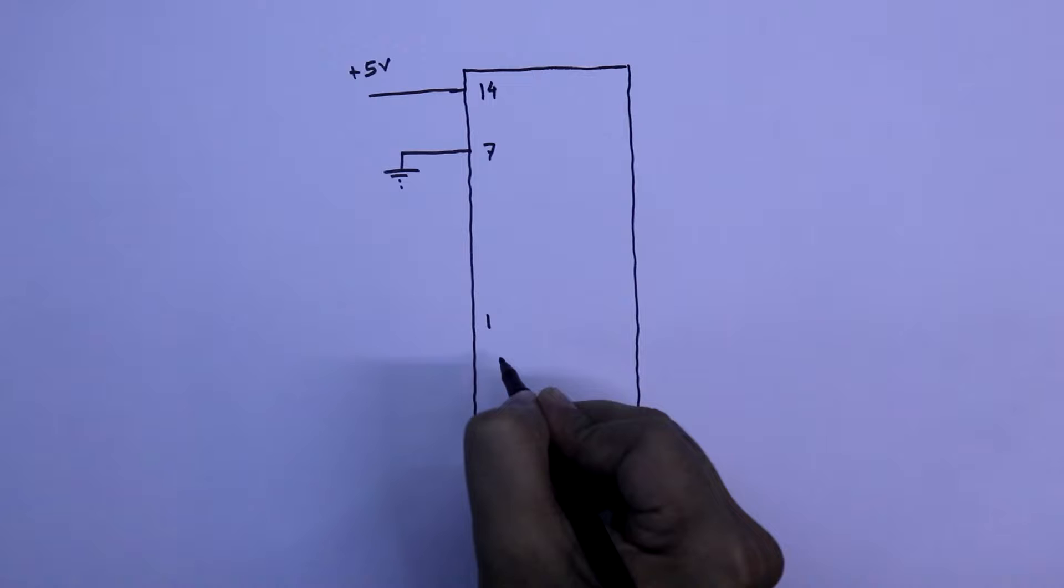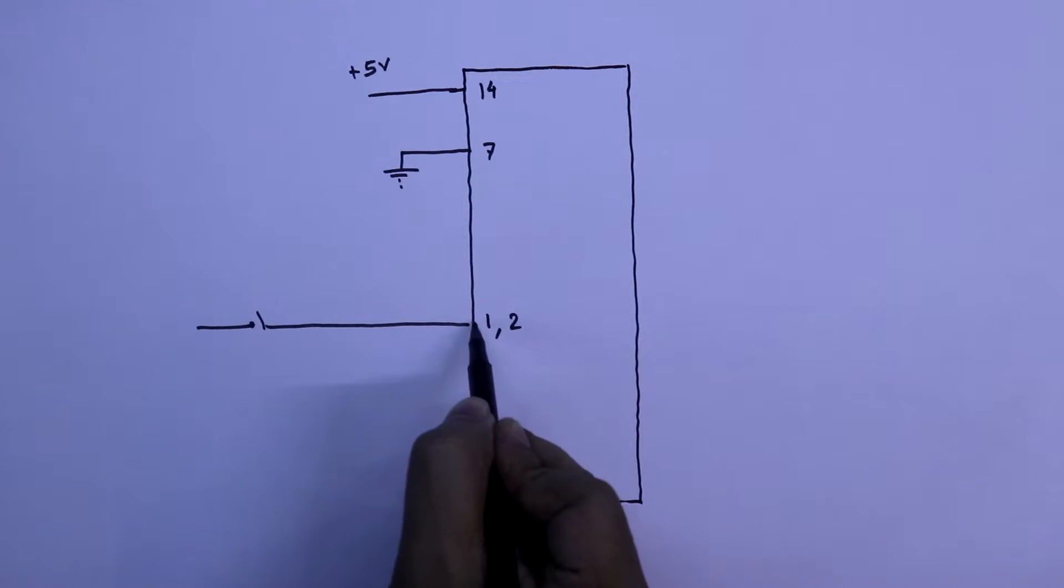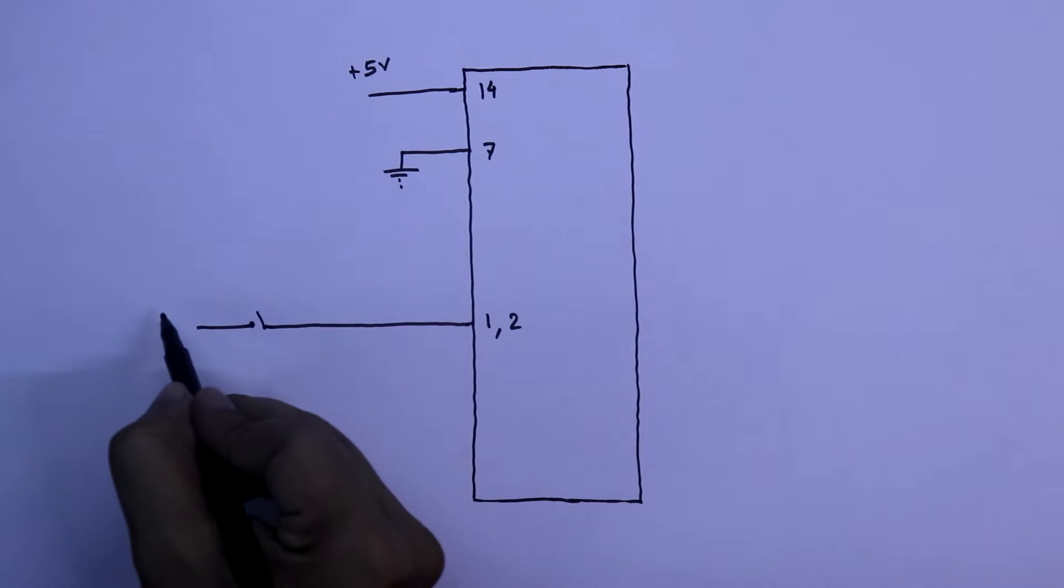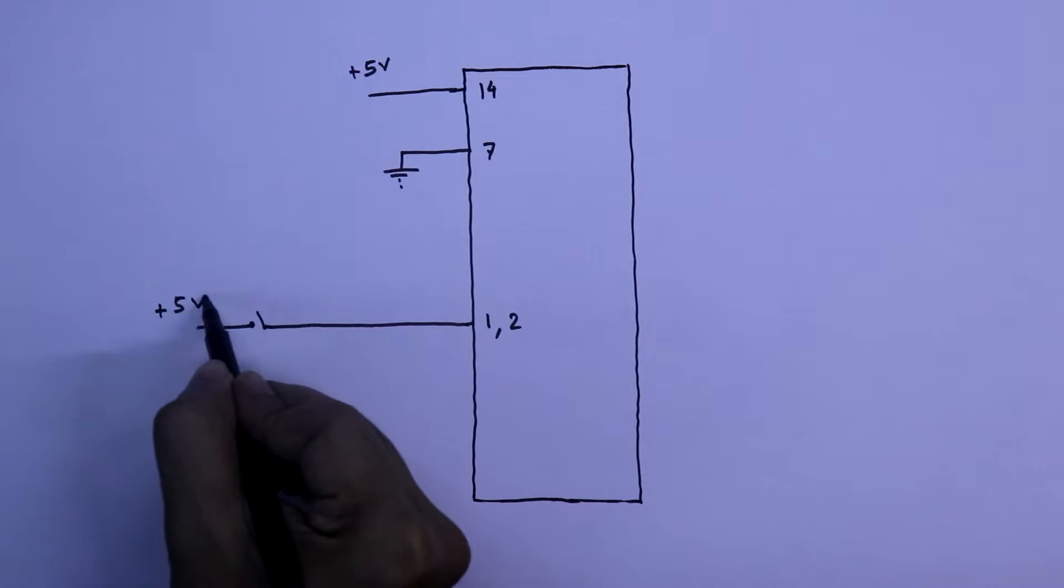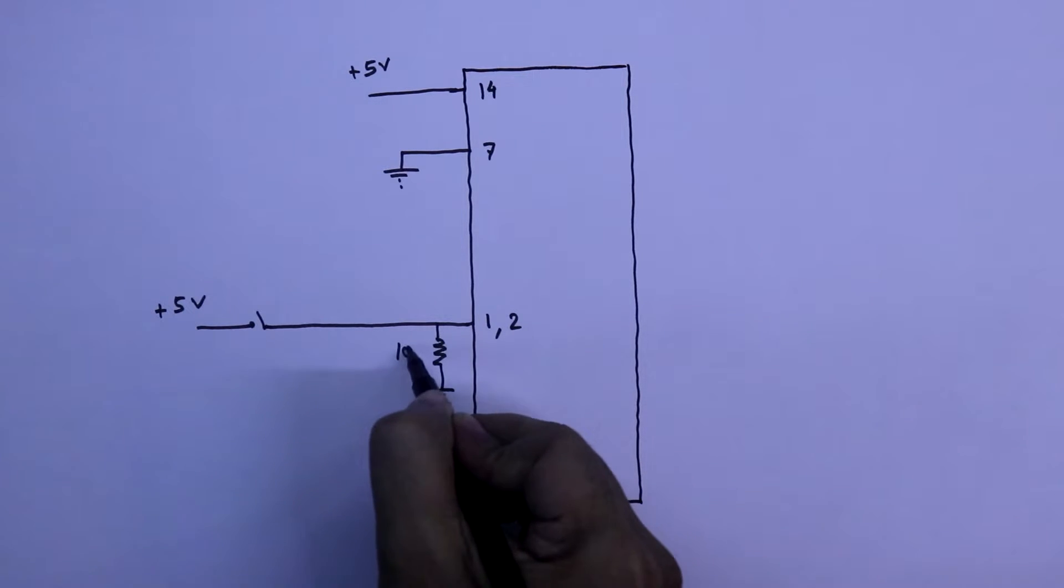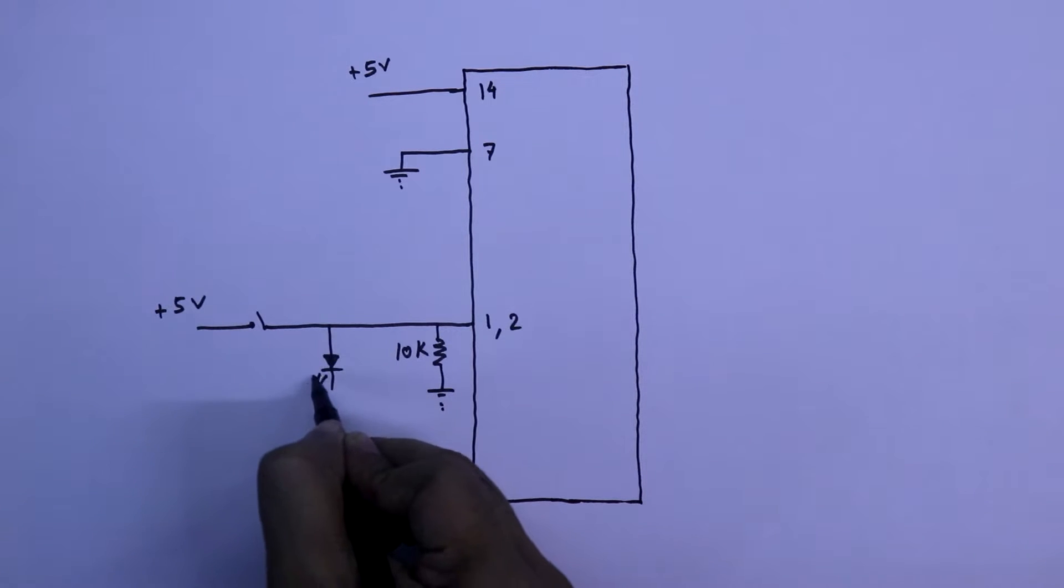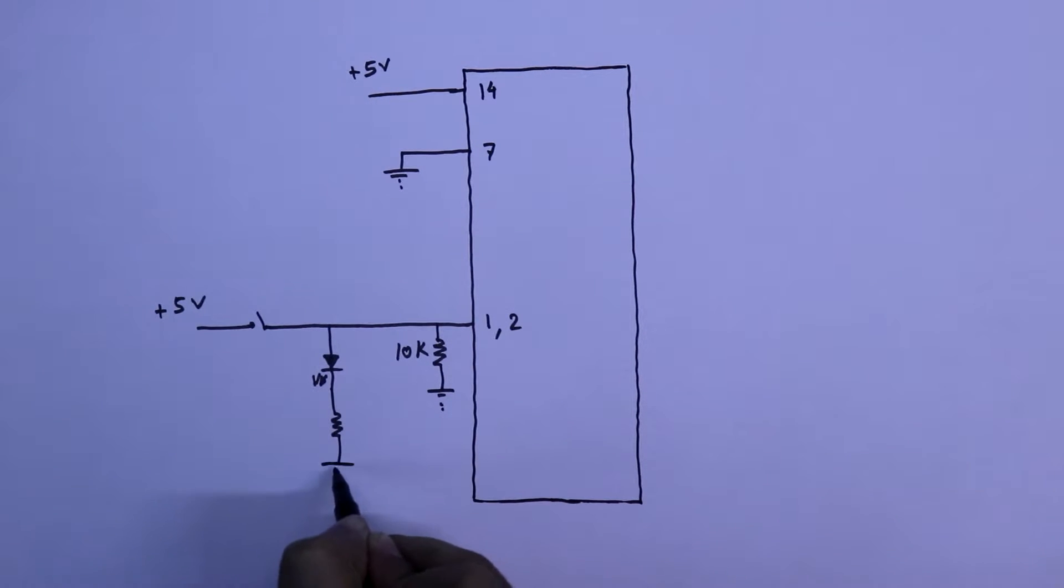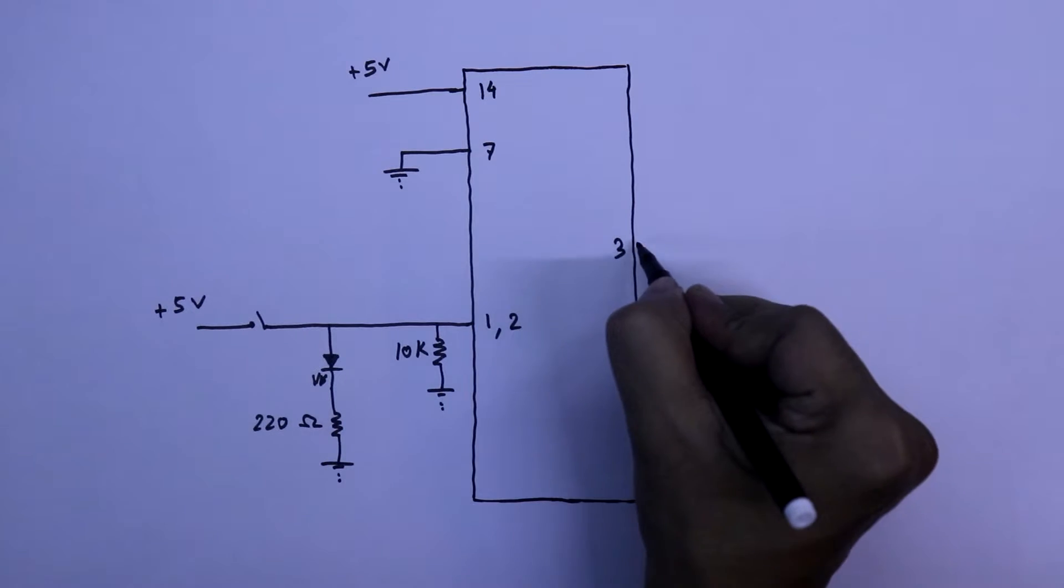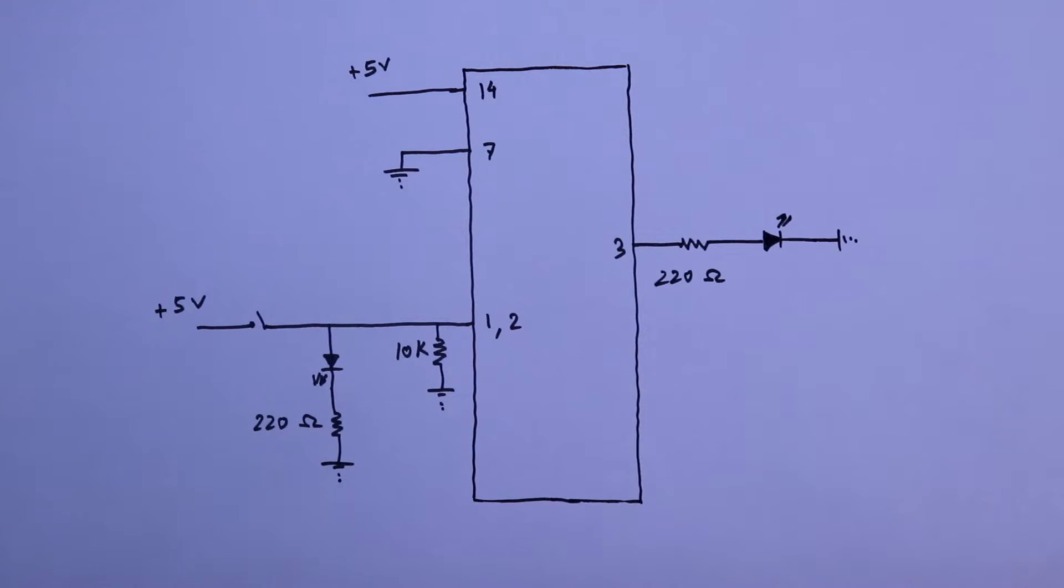Pin number 1 and 2, these two are input. And with these two, we will connect a switch to provide input. The other side of the switch is connected to the plus 5V. As it is digital IC, so we have to connect pull-down resistor. The value of this resistor is 10 kilo ohms. To see the input, we are connecting LED and a series resistor with this. The value is 220 ohms. Pin number 3 is output. And to see the output, we are connecting LED. This is the simple connection. Now we will see this thing on breadboard.